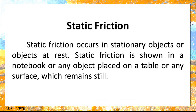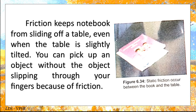Static friction occurs in stationary objects or objects at rest. Static friction is shown in a notebook or any object placed on a table or any surface which remains still. Friction keeps a notebook from sliding off a table, even when the table is slightly tilted. You can pick up an object without the object slipping through your fingers because of friction.